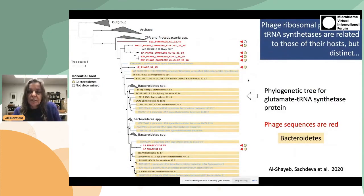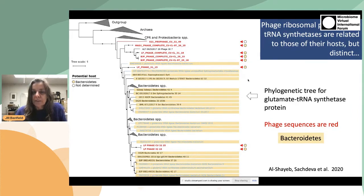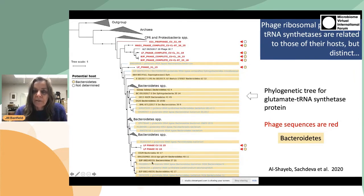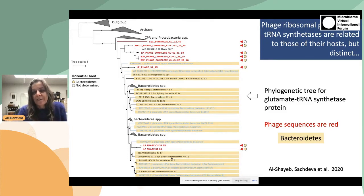If we look at the phylogeny of those ribosomal proteins and ask which proteins they are most closely related to, we find that they are closely related but distinct from bacterial proteins. The phage names are indicated in red, and the colored circles indicate cases where we could confirm hosts were Bacteroidetes by, for example, CRISPR targeting. So these phages have tRNA synthetases that are related to, but distinct from, those of related Bacteroidetes. We would infer that the phage has acquired and maybe evolved these tRNA synthetases to function slightly differently from those of their hosts.